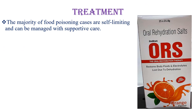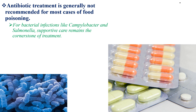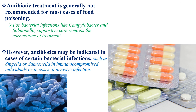The majority of food poisoning cases are self-limiting and can be managed with supportive care. The primary treatment goal is to prevent dehydration and alleviate symptoms. Oral rehydration solutions, which contain electrolytes and glucose, are essential to replace fluids lost through vomiting and diarrhea. In severe cases of dehydration or when oral rehydration is not possible, intravenous fluids may be necessary. Antibiotic treatment is generally not recommended for most cases, though antibiotics may be indicated for certain bacterial infections such as Shigella or Salmonella, especially in immunocompromised individuals or in cases of invasive or systemic infection.